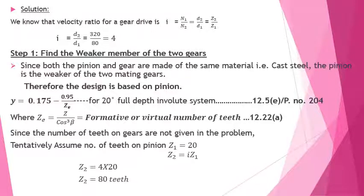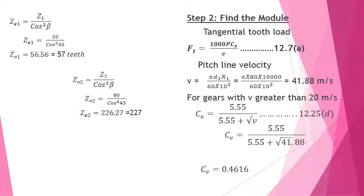Assuming Z1 = 20, then Z2 = i × Z1 = 80 teeth. The Lewis form factor depends on the virtual number of teeth Ze. For the 20 degree stub system, Y = 0.175 − 0.95 / Ze. Substituting Z1 and Z2 with beta = 45°, we calculate Ze1 and Ze2 — the virtual number of teeth on the pinion and gear respectively.